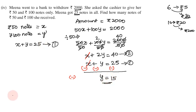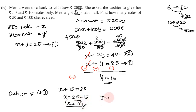Substitute y equals 15 in equation 1. x plus 15 equals 25. x equals 25 minus 15. x equals 10. So 50 rupee notes equals 10 and 100 rupee notes equals 15.